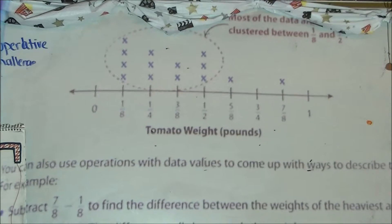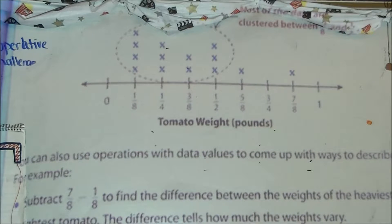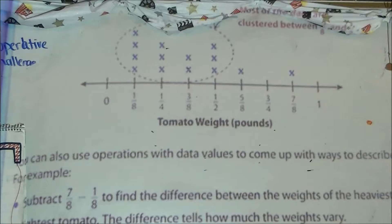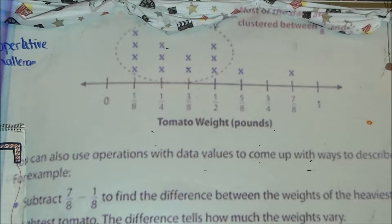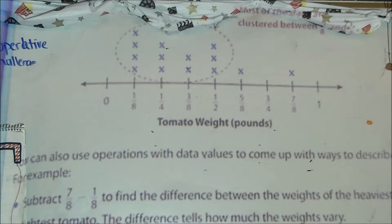Looking at the next one, it says divide: 7/8 divided by 1/8 tells us the heaviest tomato is 7 times heavier than the lightest tomato. This gives us a comparison from least to greatest. We sort of did that — I did 1/8 times what equals 7/8. They just flipped it into the reciprocal, changing multiplication into division, and you solve for that 7 the same way.